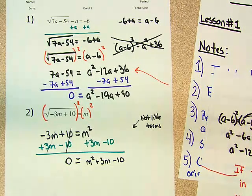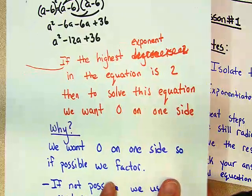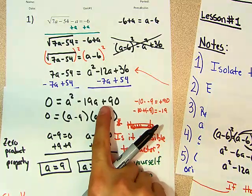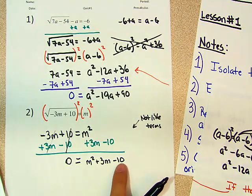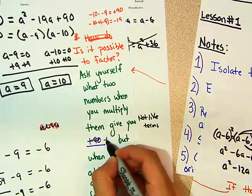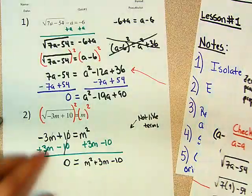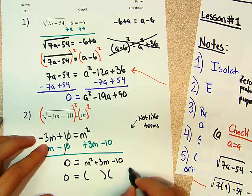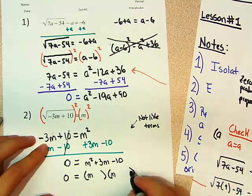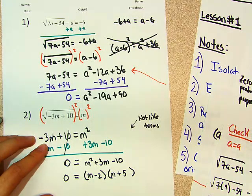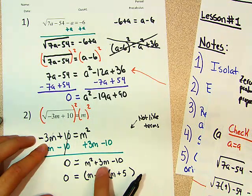What was the reason why we wanted 0? If it's possible, we can factor. Can we factor this the same way we factored this? Are there two numbers — ask yourself: what two numbers, when you multiply them, give you negative 10, but when you add them, give you positive 3? Yes, you can factor this. This is m and m. Positive 5 and negative 2 — because 5 times negative 2 is negative 10, and positive 5 plus negative 2 is positive 3.